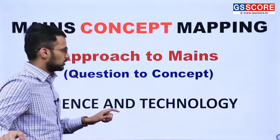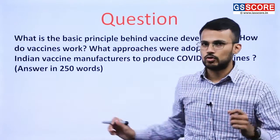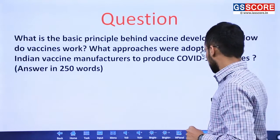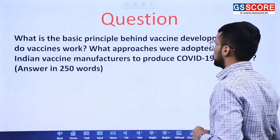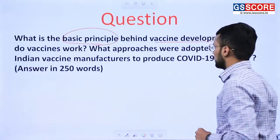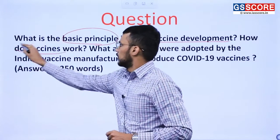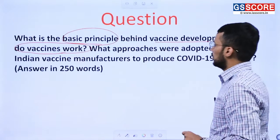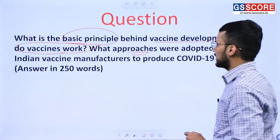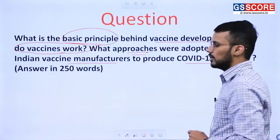Let us start with the question. The question we are going to discuss in this approach to mains is from Mains 2022, Science and Technology. The question is: What is the basic principle behind vaccine development? How do vaccines work? What approaches were adopted by Indian vaccine manufacturers to produce COVID-19 vaccines?